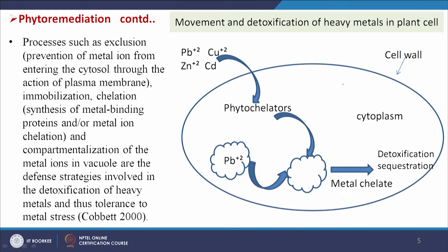Now we will see how the detoxification mechanism works in plants. The processes include exclusion — prevention of metal ions from entering the cytosol through the action of the plasma membrane — immobilization, and chelation, which involves synthesis of metal-binding proteins and metal ion chelation, along with compartmentalization of metal ions in vacuoles. These are the major mechanisms for detoxification of heavy metals available in water and soil.